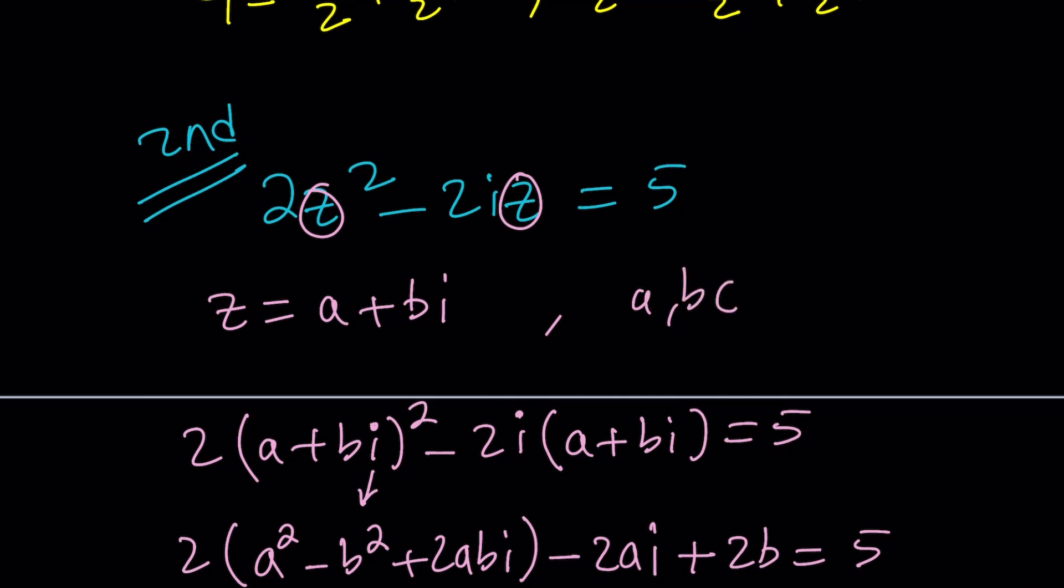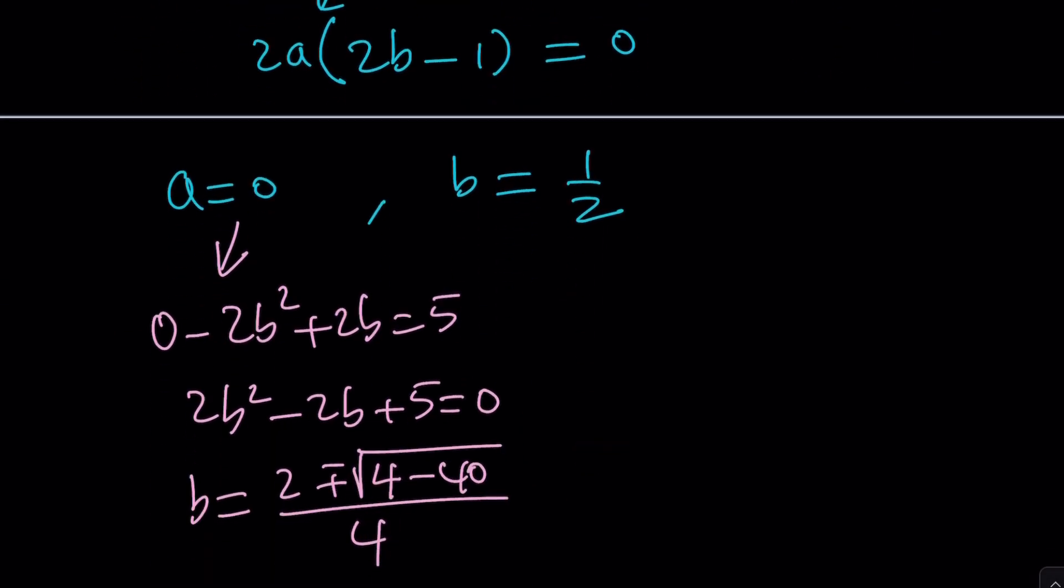But b is supposed to be a real number. Why? Because this is a number in the standard form. a is the real part, b is the imaginary part, and they're both supposed to be real. So this means a equals 0 is not a good choice. So we have to discard it and go with b is equal to 1 half.